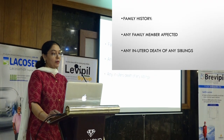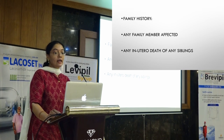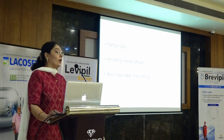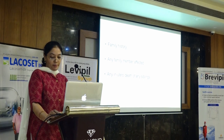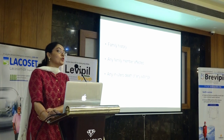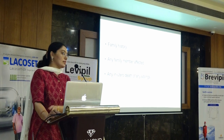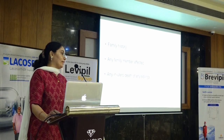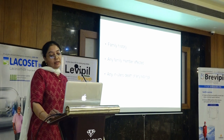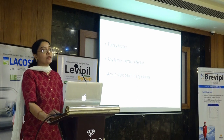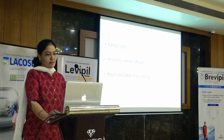Any family history — any family member affected, like in Duchenne's which is X-linked. We would like to know any family member affected or any in utero death of siblings. Especially for congenital myopathies like Nemalin rod, usually there is a history of previous pregnancy ending with in utero death. So in addition to the infant being floppy, we actually think of congenital myopathies.